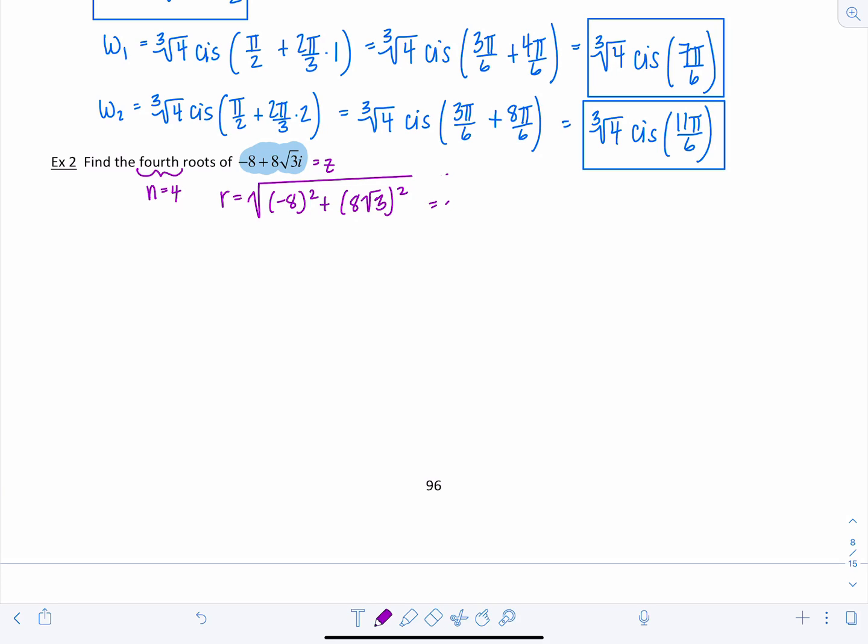Well this is going to be the square root of 64 plus 64 times 3, so that's going to be 4 times 64. The square root of 4 is 2, square root of 64 is 8, so this is going to give us 16. And then tangent of theta is going to be 8 rad 3 divided by negative 8, so negative rad 3. And we are in quadrant 2, which means that theta is equal to 2 pi over 3.